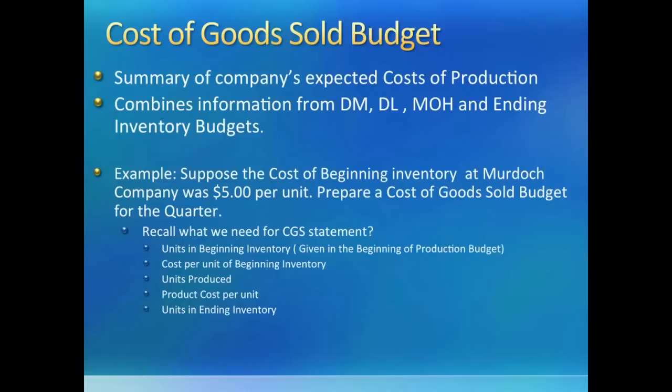Murdoch has 2,000 units in beginning inventory. This information was given to us when we made the production budget. We are told that the cost on the cost of goods sold statement is $5 a unit. You can picture the finished goods inventory account from chapter 2 or the cost of goods sold statement where beginning inventory plus cost of goods manufactured minus ending inventory equals cost of goods sold. So we would need beginning inventory, ending inventory, their per unit cost, and the cost of goods manufactured during the quarter — meaning all of the manufacturing costs.